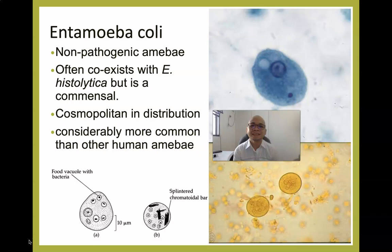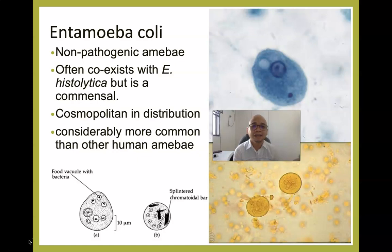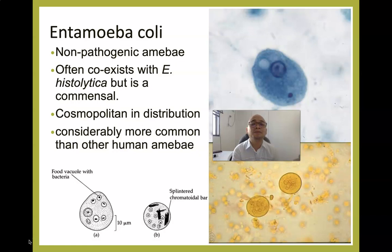This is a continuation of the intestinal protozoans discussion. We start with non-pathogenic amoeba of man, particularly Entamoeba coli, which is commonly confused or mistaken for Entamoeba histolytica when medical technologists perform fecalysis. Entamoeba coli is non-pathogenic but significant because finding it in a stool sample indicates potential coexistence with Entamoeba histolytica. Unlike E. histolytica, E. coli is commensal, cosmopolitan in distribution, and considerably more common than other human amoeba.